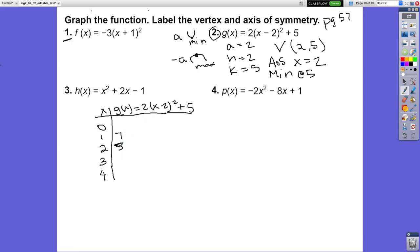This is the vertex, so it should be mirrored on both sides. Let's plug in x = 3: 3 - 2 = 1, 1² = 1, 1 × 2 = 2, 2 + 5 = 7.